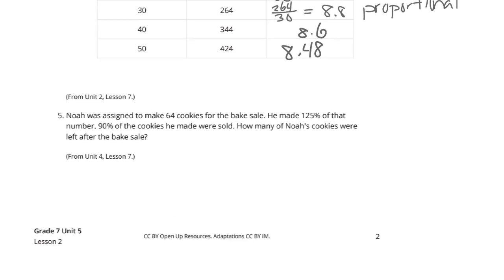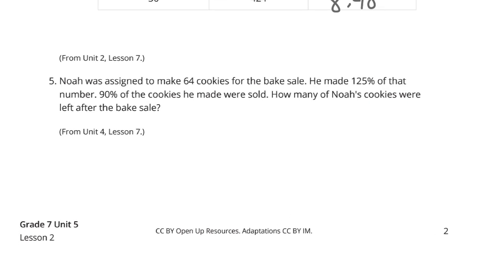Now, as we get to our last question of the lesson and the homework practice problems review, Noah was assigned to make 64 cookies for the bake sale. He made 125% of that number. 90% of the cookies were sold. How many of Noah's cookies were left after the bake sale? Let's first figure out how much he made. He made 125% of 64. If you're looking for 64 times 125%, which we can represent by the decimal 1.25. When we take 64 and multiply by 1.25, we get 80 cookies.